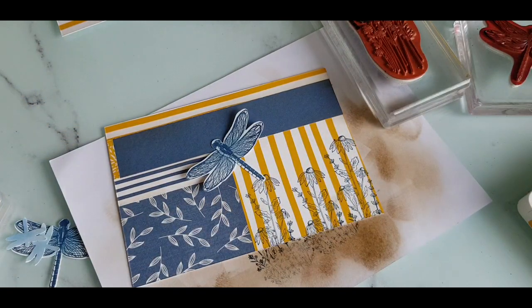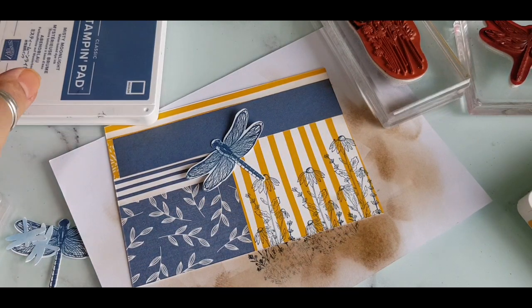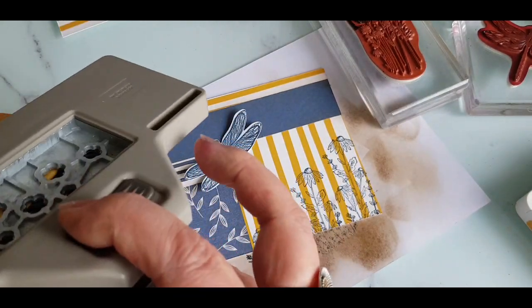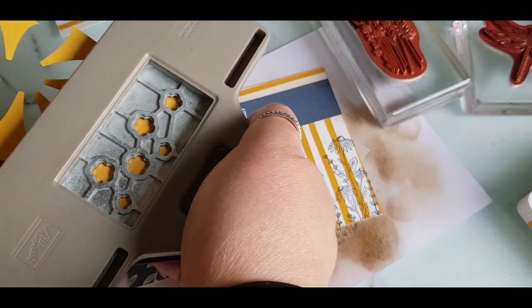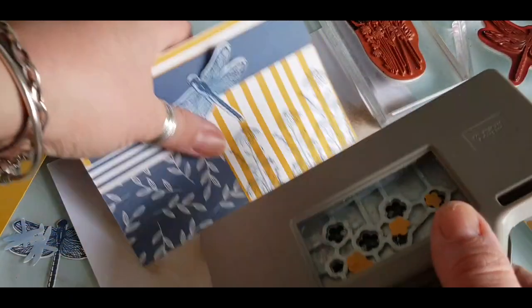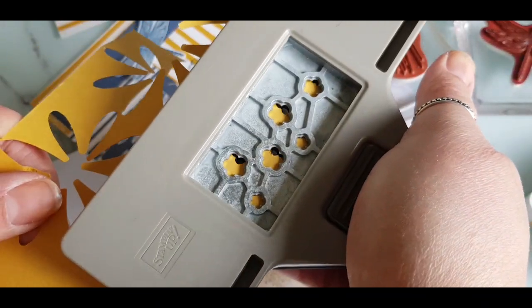Stamping that lovely meadow stamp set onto the stripes and then grabbing my confetti flower punch to punch out some of these tiny little flowers. By putting my hands on top it just stops the confetti jumping everywhere and it helps you to be in control of it a bit more.